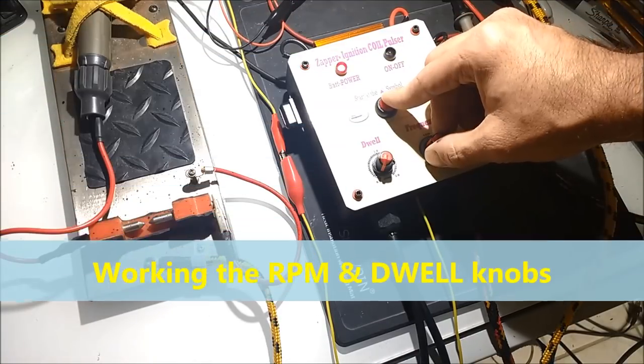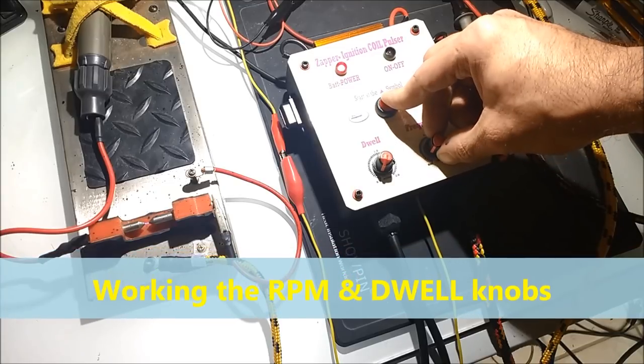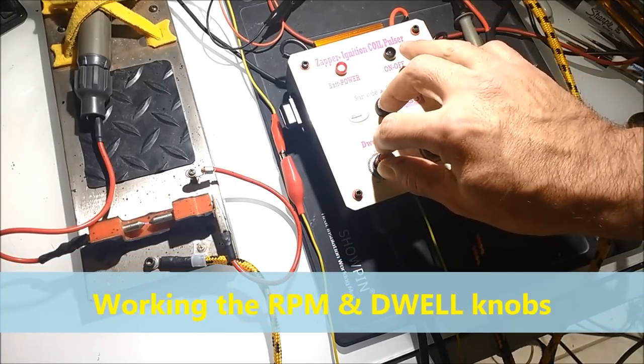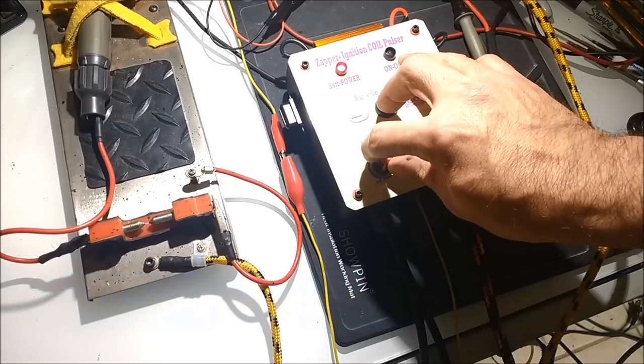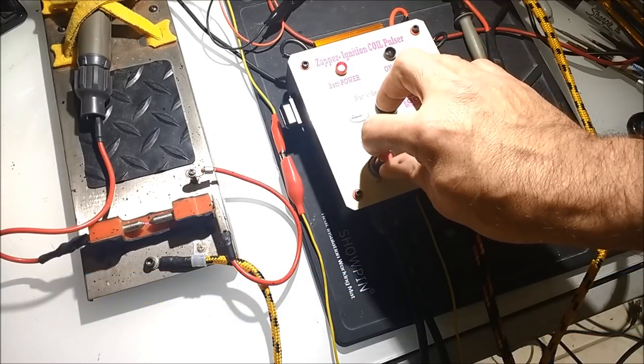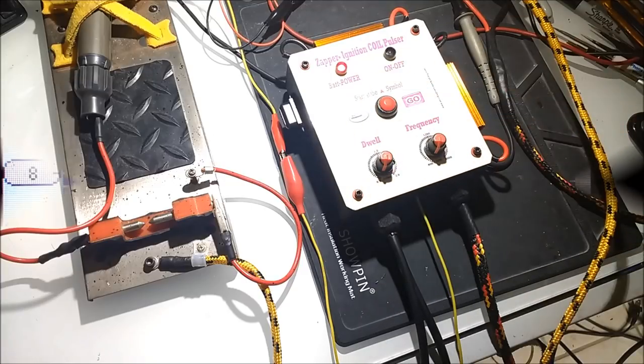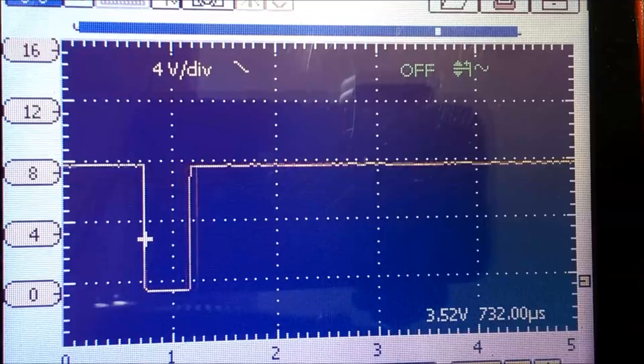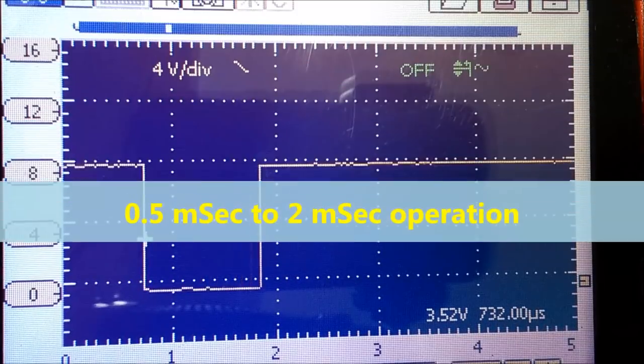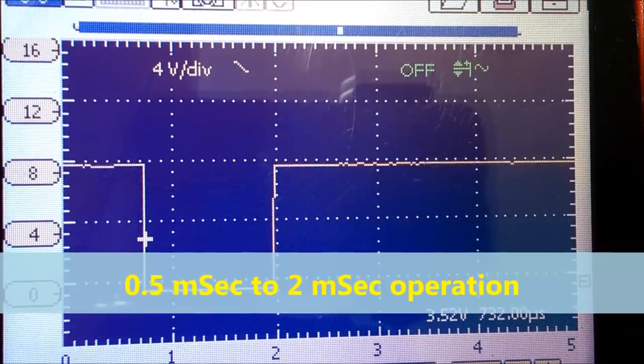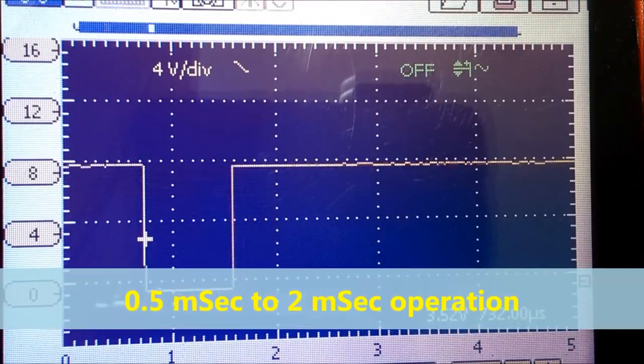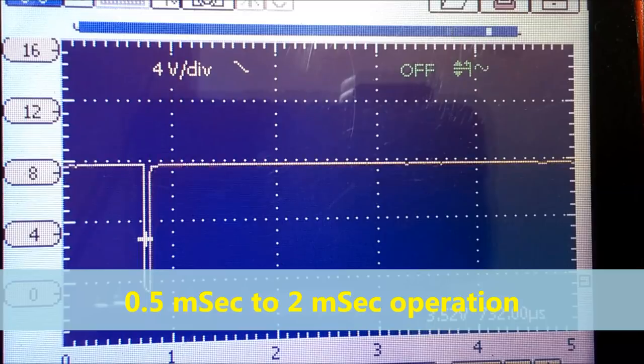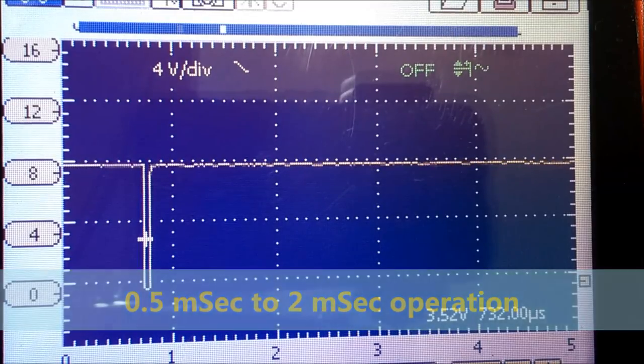This unit effects the right RPM and the right dwell. The trigger is done right through that particular terminal, that one terminal that's the input for the trigger. Most of these coils operate under two milliseconds. The Zapper is variable from half a millisecond or 500 microseconds to two milliseconds, which will cover 95% of your situations in real life.